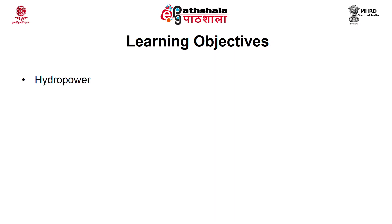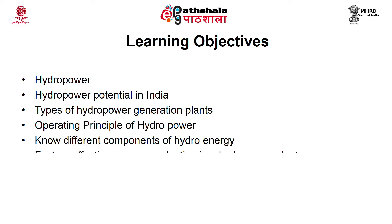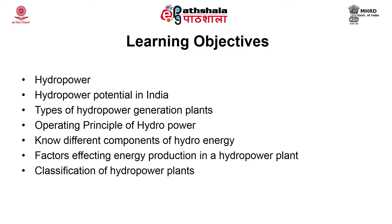Hydropower is used for electricity production as well as for drinking, irrigation, and other purposes. In this module, we will look into the hydropower potential and how it is calculated, the principle and operation of a hydropower plant, how to classify hydropower plants, factors affecting energy efficiency, components, types, benefits, disadvantages, and India's hydropower potential.